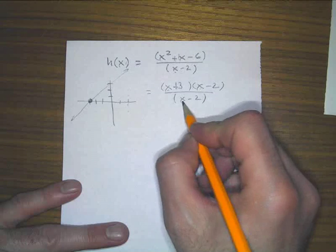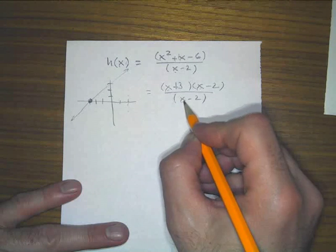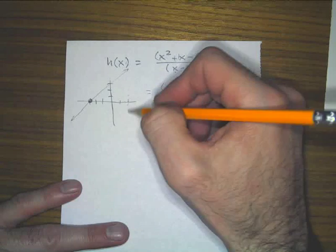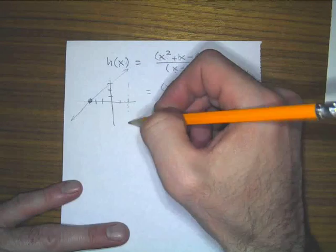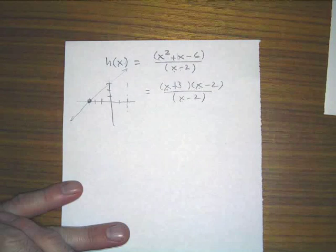And if you plug in a two down here, you should get a vertical asymptote because you're divided by zero. But you know what? It's not there either when you look on your calculator.